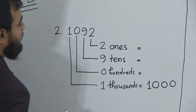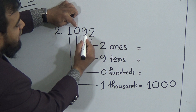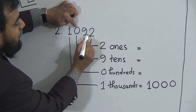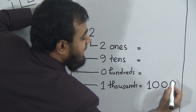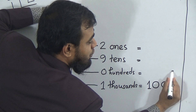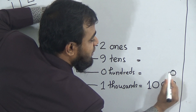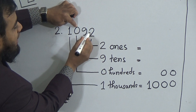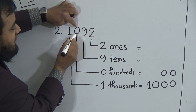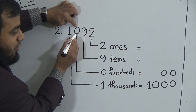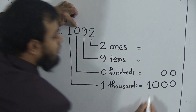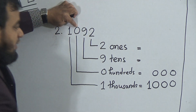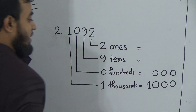Now, 0 hundreds. After this 0, how many digits are there? We have 2 digits, so we use 2 zeros from the right side. Before those 2 zeros we write this number, which is 0 — so we write 0 and then 2 zeros. This indicates 0 hundreds.